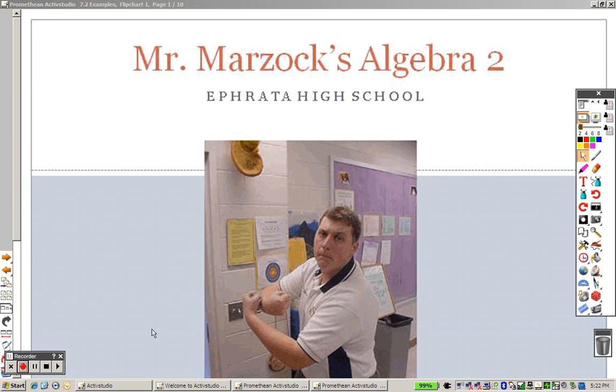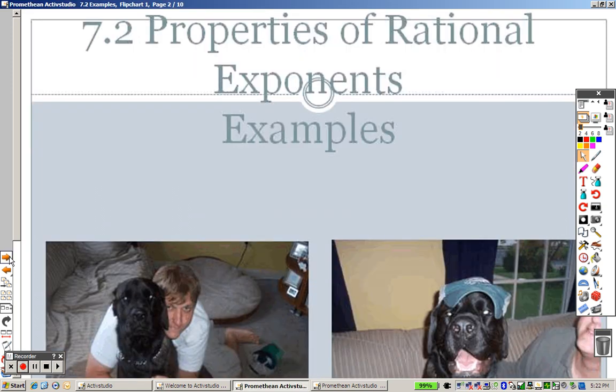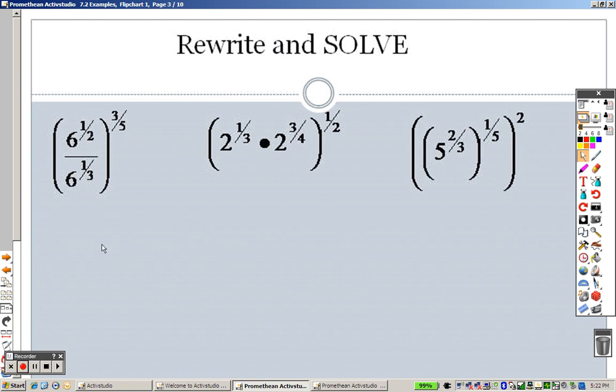7.2 - we're going to do some examples now. 7.2 was properties of rational numbers and the exponents. We went over these in chapter 6, so this isn't anything completely new, but what it is, is not so much new as much as just kind of a review, but seeing how everything works with rational exponents.